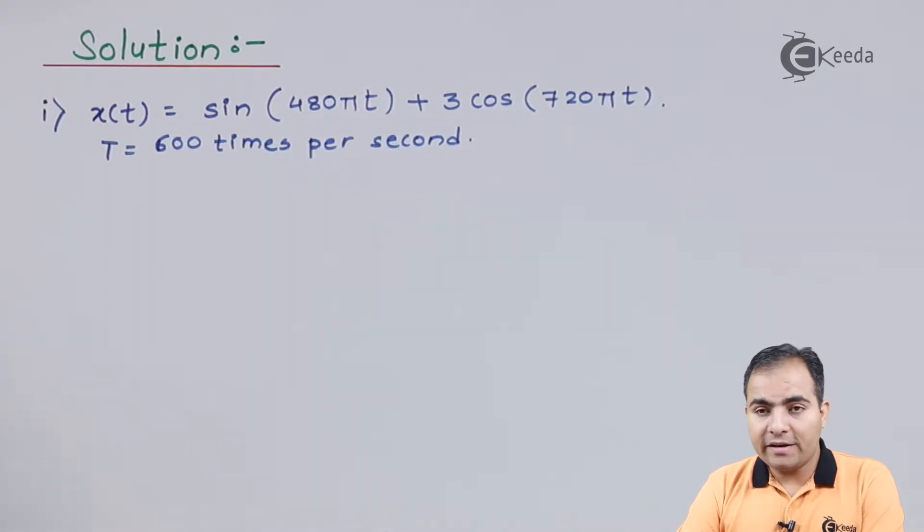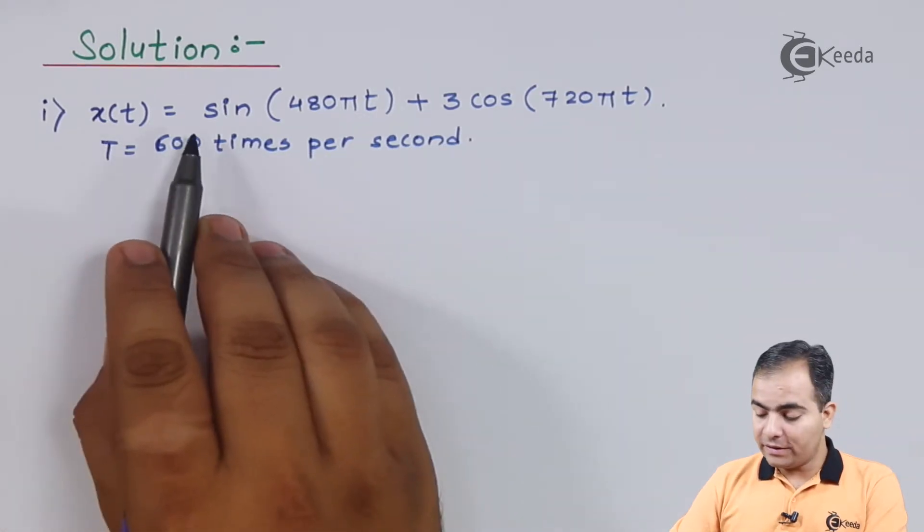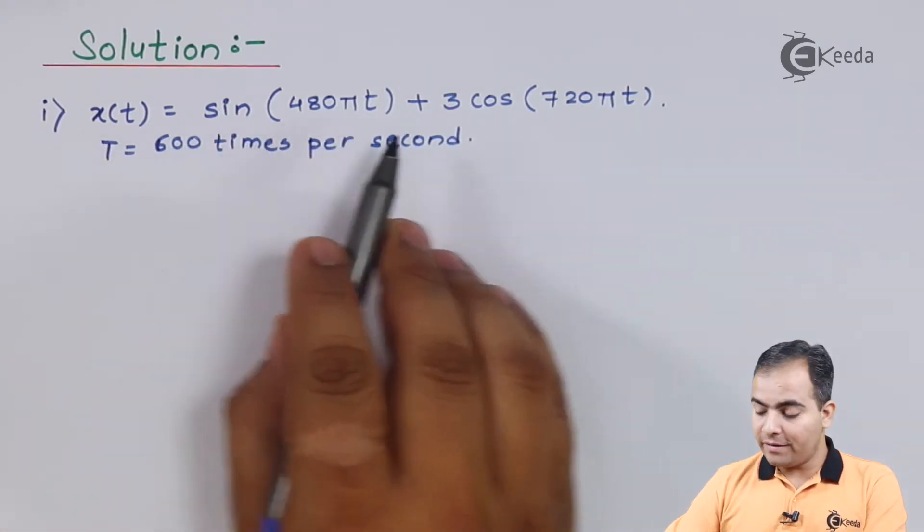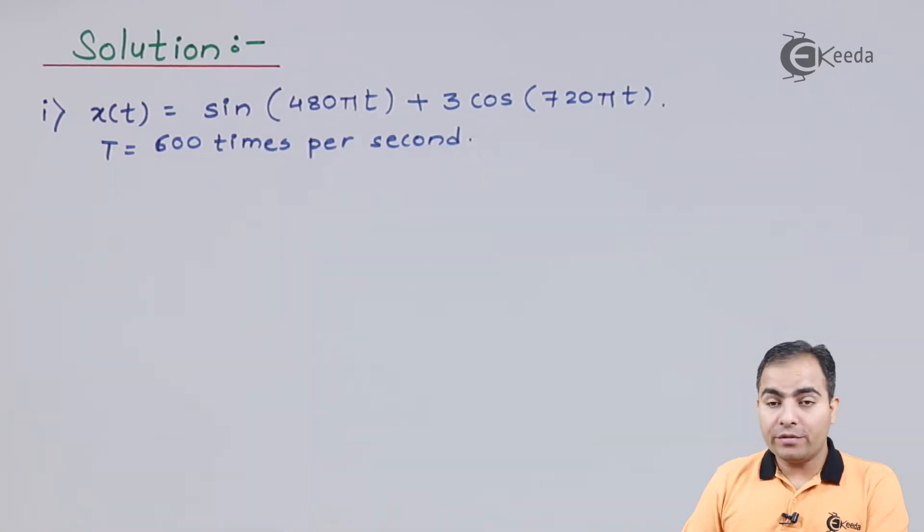So first of all, x(t) is given as sin(400πt) + 3cos(720πt). Now we are going to calculate the first part, the Nyquist sampling rate. But while calculating the Nyquist sampling rate, you should know what is the maximum frequency present in our question.